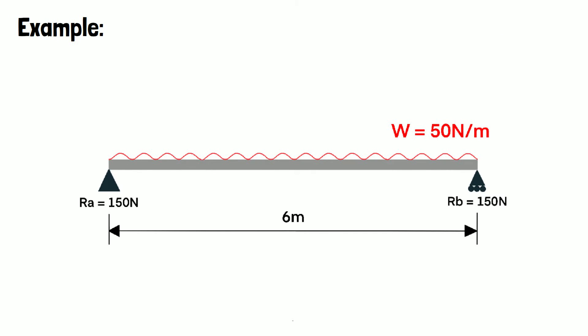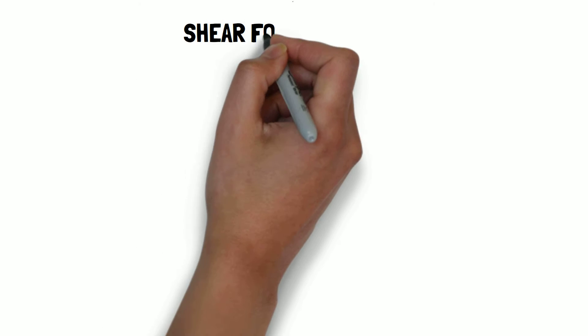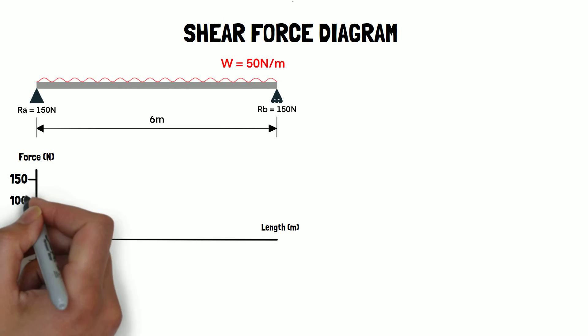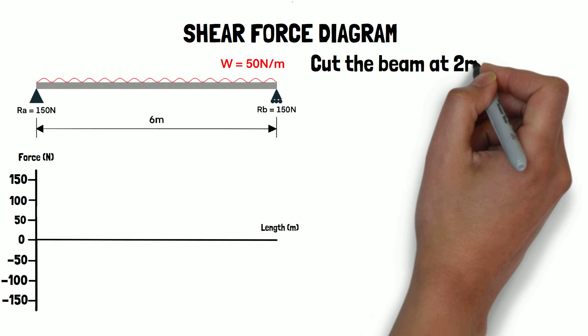In order to draw our diagrams we need to make imaginary cuts along the beam where we are going to determine our shear force and bending moments. In both instances we will be taking into consideration the forces to the left of the cuts. It must be noted that as our beam is in equilibrium the total forces and total moments acting on the beam are both zero. We'll begin by drawing the shear force diagram, cutting the beam at two meter intervals.